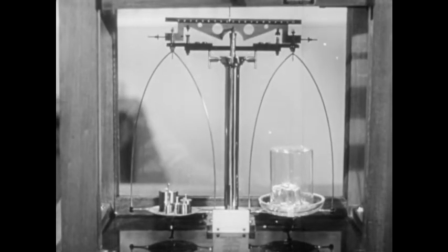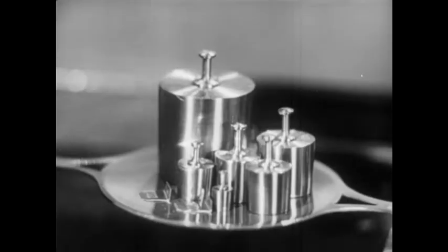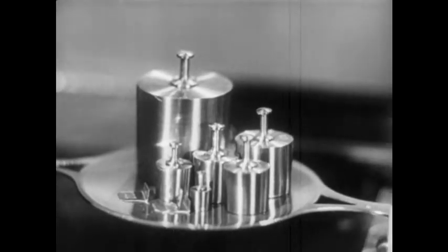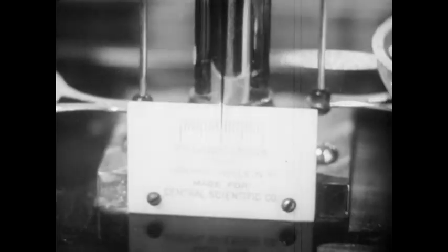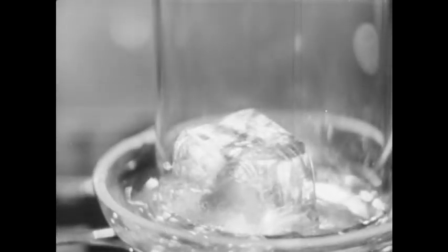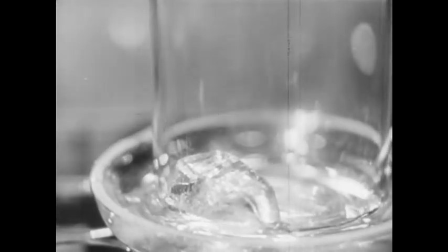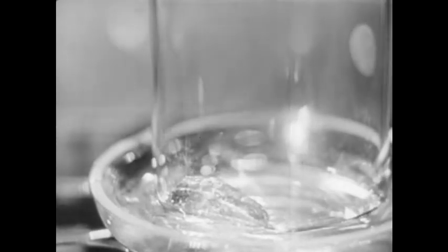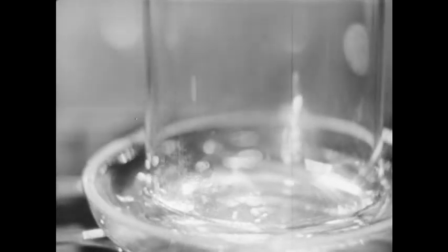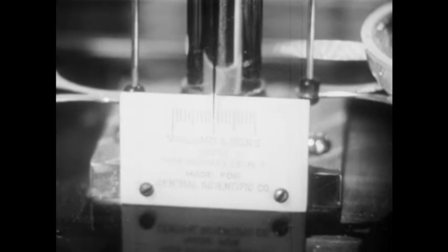If heat is an invisible matter that flows in or out of materials, we should be able to weigh it. This is the weight of a tray, an ice cube, and a cover. The pointer shows zero. All materials have weight. In melting, ice should be losing weight. Does it? There, all ice is gone. Will the pointer show any loss of weight? No. Evidently, heat is not a material.